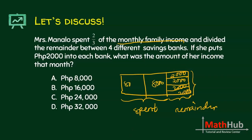The remainder is 8,000. From the diagram, the full income consists of three equal sections of 8,000 each, so the total monthly income is 8,000 times 3, which is 24,000. Letter C.